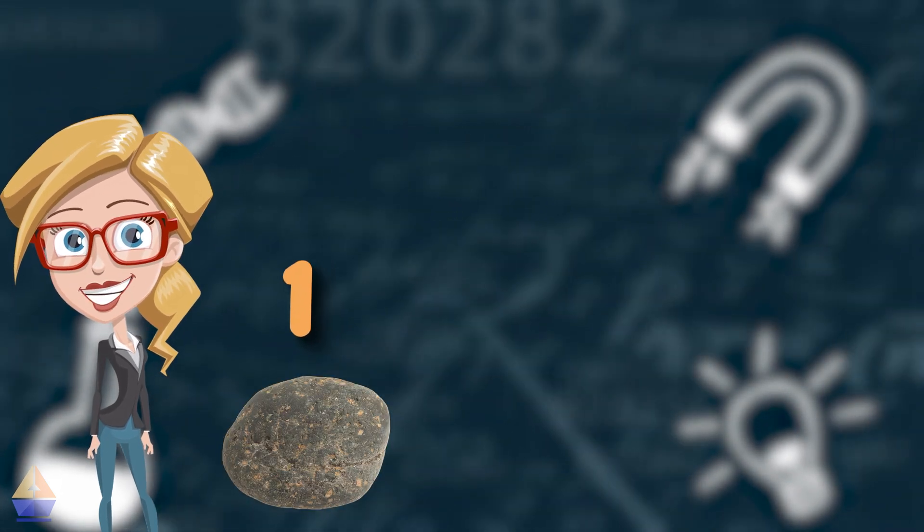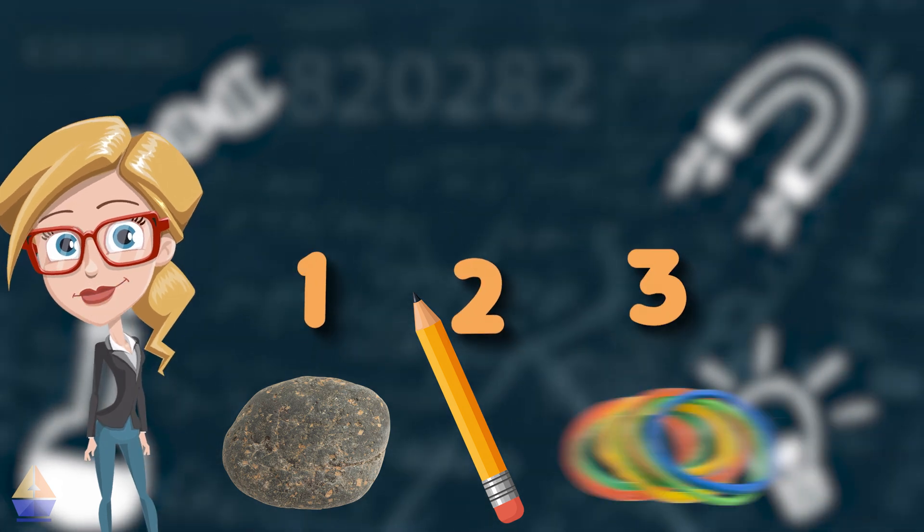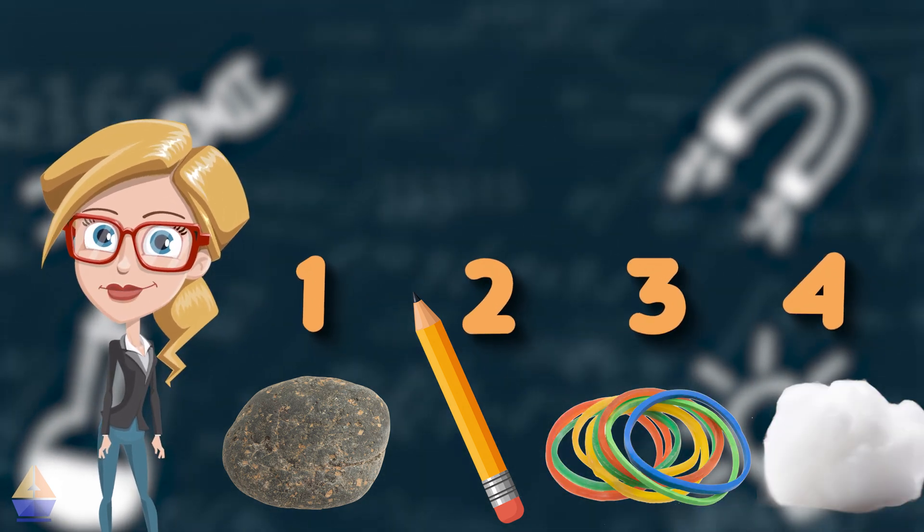Great job! Here's how I would arrange them. One, the rock being the hardest. Two, the pencil. Three, the rubber band. And four, the cotton ball, which is the softest.